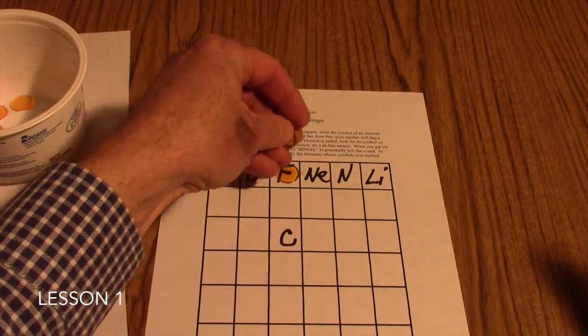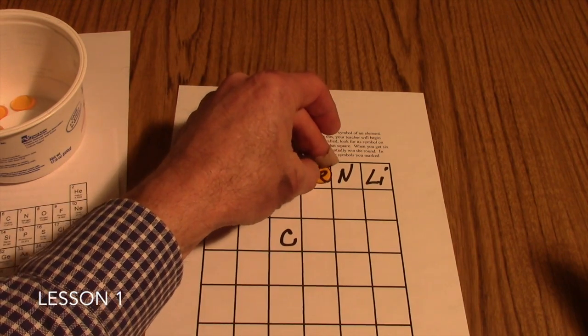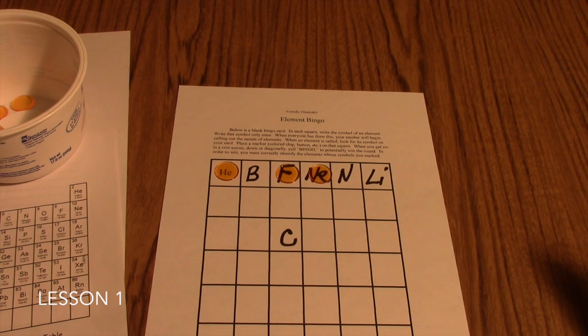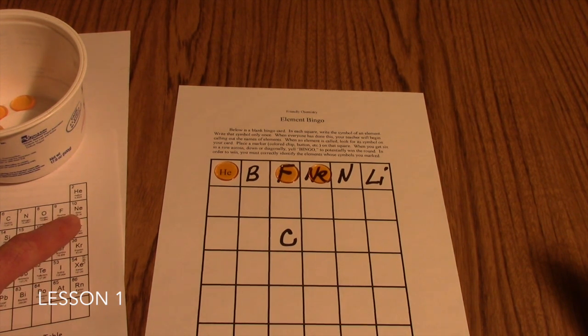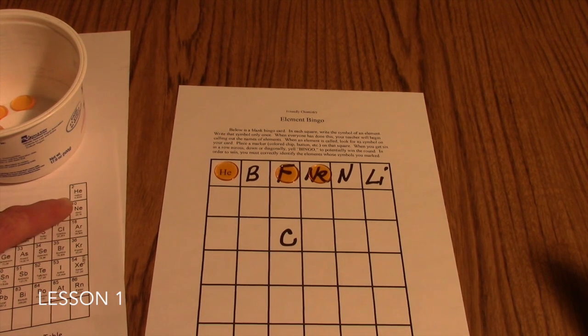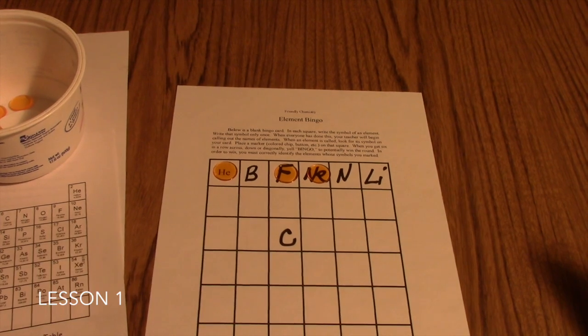If you call out Neon, I'd look on my card and I'd find NE for Neon. We do encourage you to allow your students to have access to look at their periodic tables of elements, where it does have the symbol and the name on it both together. So they're reinforced that 10 is N-E Neon. And I can find Neon over here.